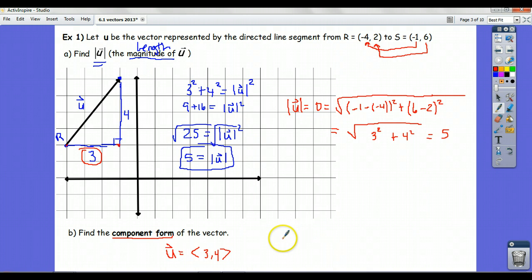If you're not looking at a graph, you can use the point information to get that answer. The vector is described as taking you from r and moving you to s. So what you can do is take point s and subtract point r. So s is (-1, 6), r is (-4, 2).